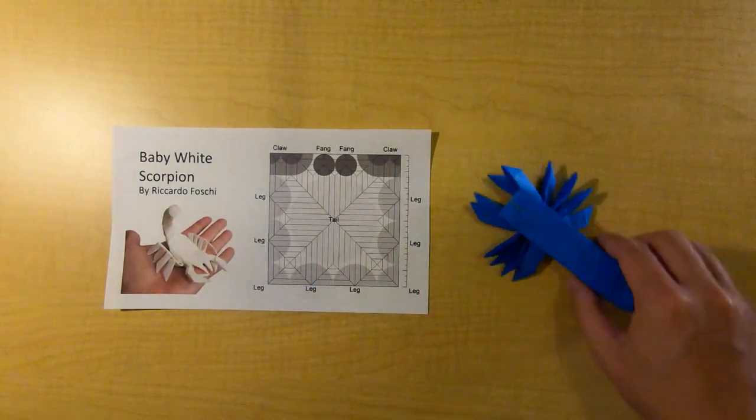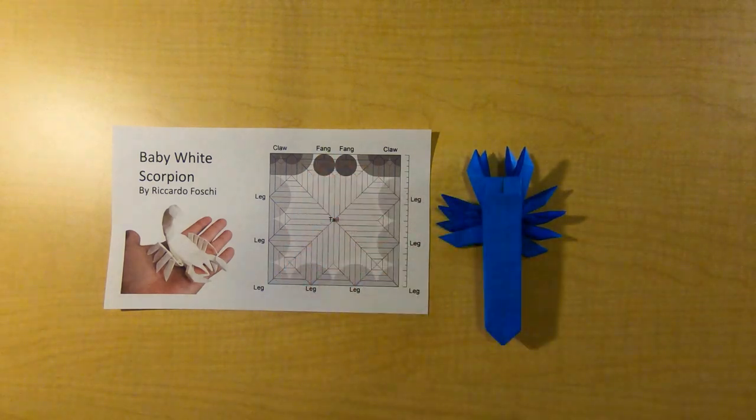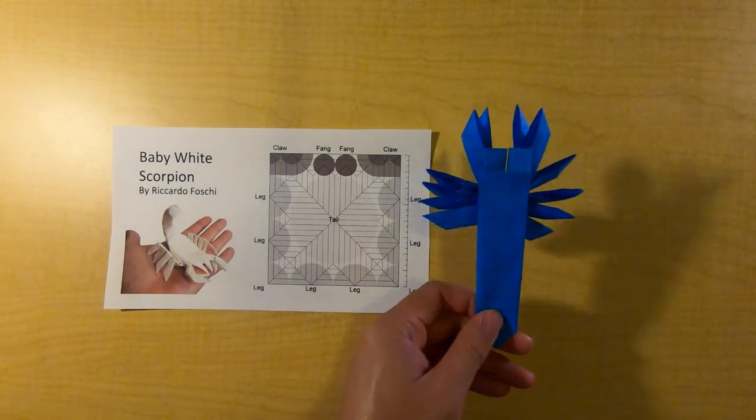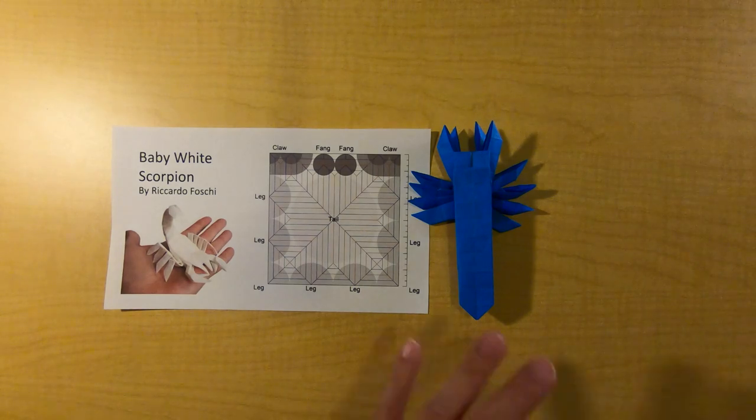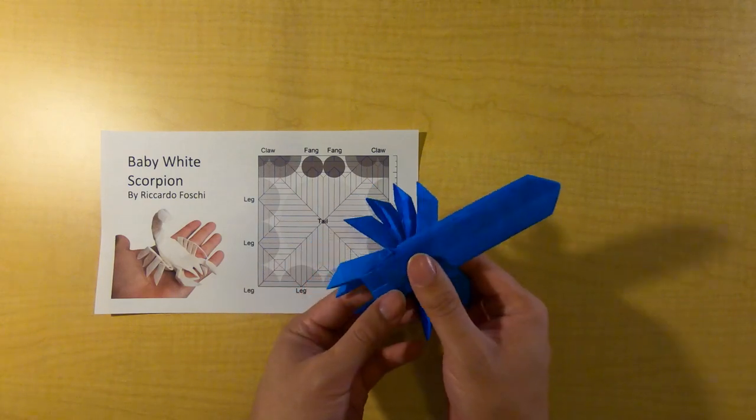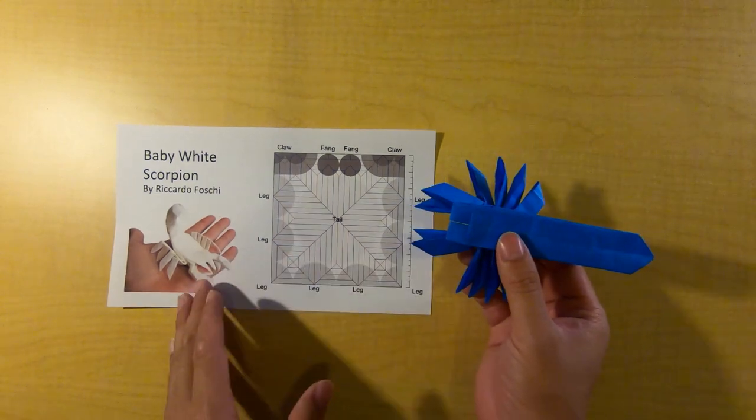Now as you can see, I only have the base of the scorpion folded, and that is because we're going to be using this model for the shaping class which will come out in two classes I believe. So if you want, feel free to try to fully shape this model. It's pretty generic on the shaping if you look at the photo.